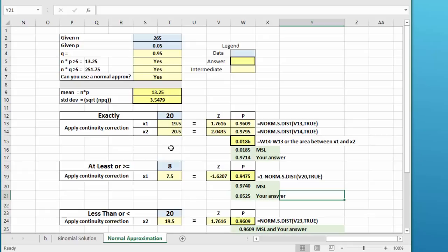The first question was, what is the probability of exactly 8 of the workers in our sample of 265 saying yes? When we use the normal approximation, we have to apply the continuity correction, which is adding and subtracting 0.5, and so our x1 value is 19.5, our x2 value is 20.5. I calculated the z value for each of those x's, and got a z of 1.76 for the lower and 2.04 for the upper.